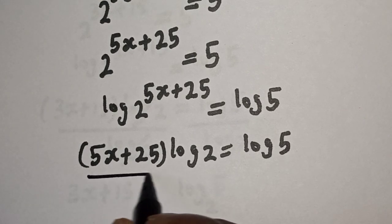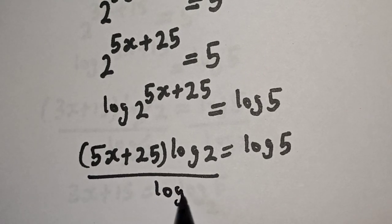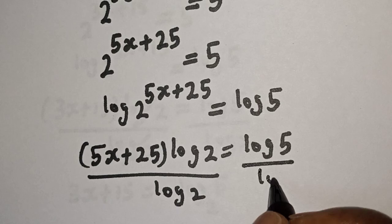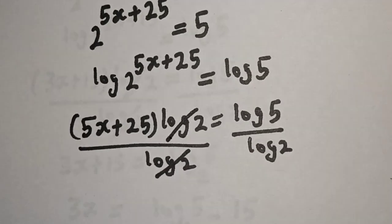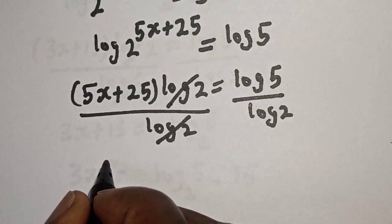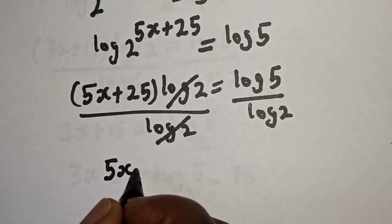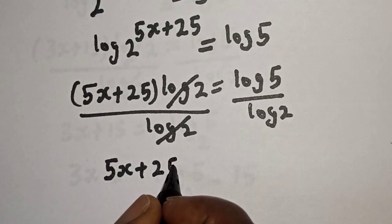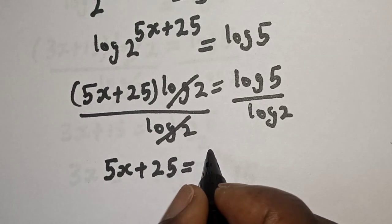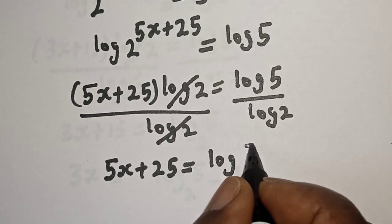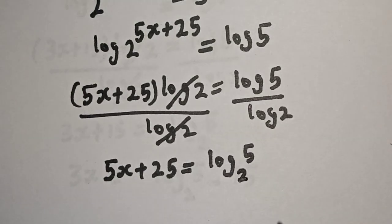Let's divide both sides by log 2. Divided by log 2, divided by log 2—this is why we cancel this. We have 5s plus 25 equals log 5 over log 2, which can be written as log base 2 of 5.